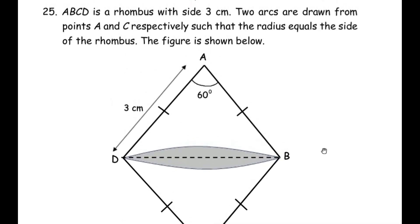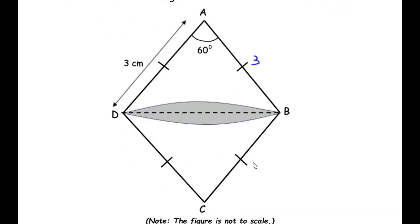ABCD is a rhombus with side 3 centimeters. One property of a rhombus is that all sides have equal lengths, so AB, BC, CD, and DA are all 3 centimeters. Another property is that opposite angles are equal. Here angle A is opposite to angle C, so if angle A is 60 degrees, angle C is also 60 degrees.